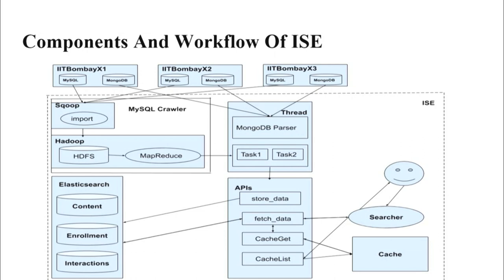Indexes are essentially databases. We have one for content, one for enrollment, and one for interactions — this will be explained later. The searcher is the component from which the search starts: any user types a search and gets the result. We have also integrated cache for obvious reasons. Elasticsearch performs its operations and gives the result back to the searcher. All these interactions are happening with the help of Django REST APIs.